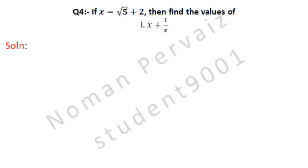Let's see its solution. As we are given the value of x, which is under root 5 plus 2. We write the value of x. Now look at part 1 — it contains the value of x and 1 over x, so first we need to find the value of 1 over x.